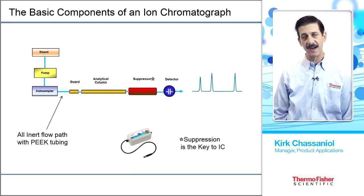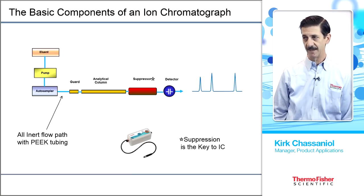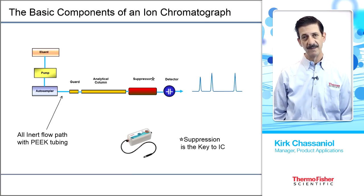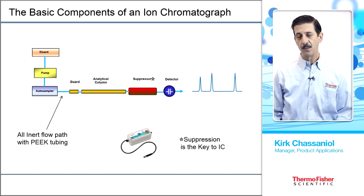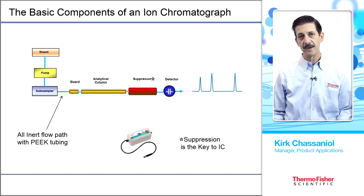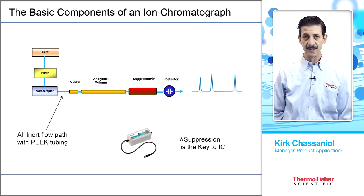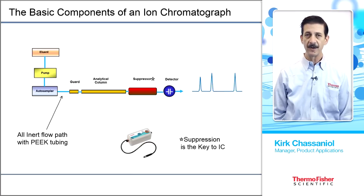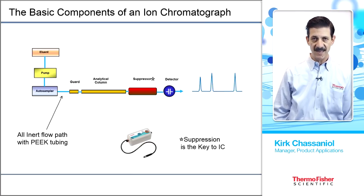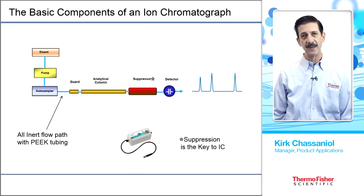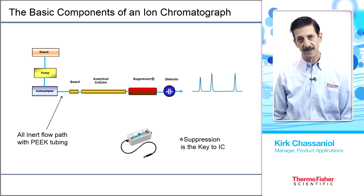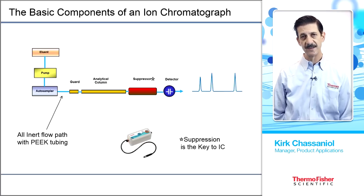Suppression is the key to ion chromatography. Another key component of an ion chromatograph is the materials of construction. All of the wetted parts — the flow path of our eluent, samples, and detector — are all constructed of PEEK, polyether ether ketone, an inert material resistant to strong acids and bases.